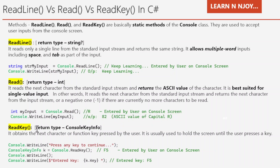Now let's see the ReadKey method. Its return type is ConsoleKeyInfo. Whatever the next character or function key the user presses, we capture it with the help of the ReadKey method. It obtains the next character or function key pressed by the user. In this example, I have written a Console.WriteLine statement informing the user to press any key to continue.